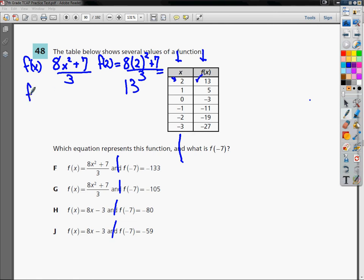Let's try f(1). All I'm going to do here is 8 parentheses 1 squared plus 7 over 3. When I plug that in, I get 5. So when I plug in this, I got this. Things are looking great for me.